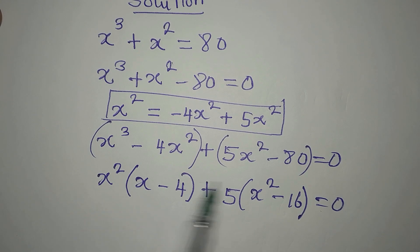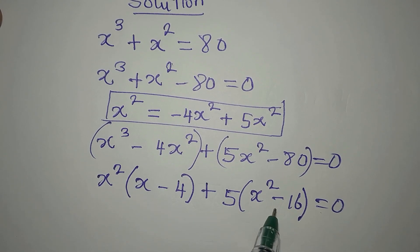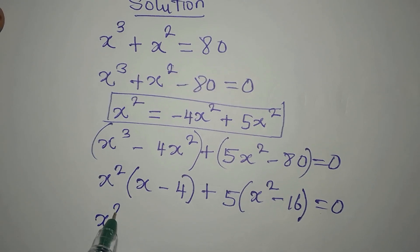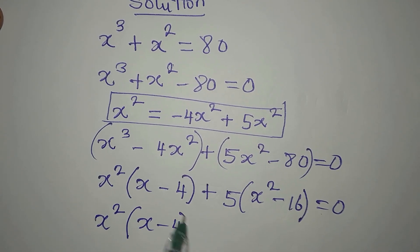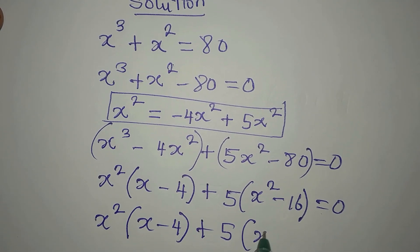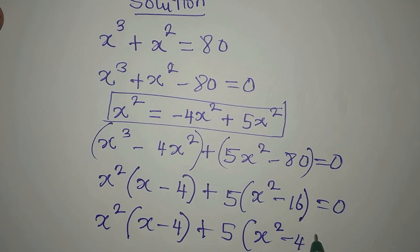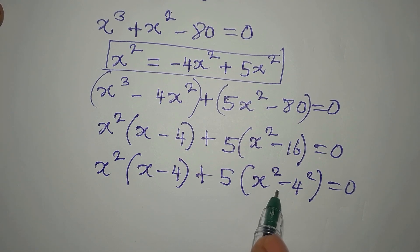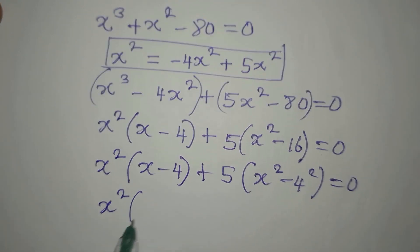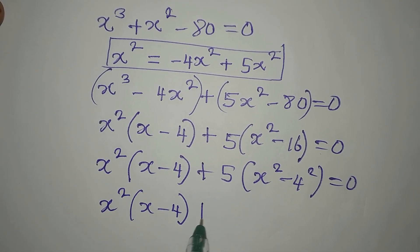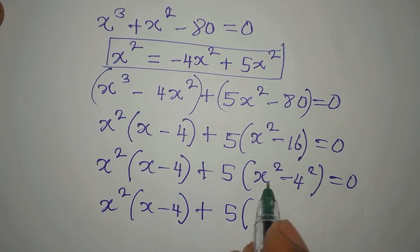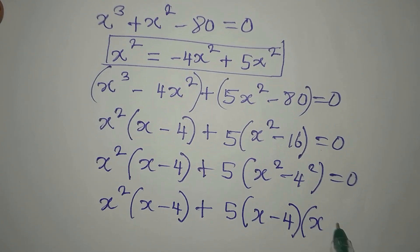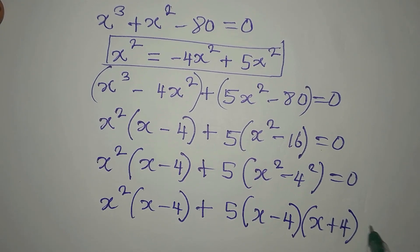We still need a common factor, so we simplify further. We have x²(x - 4) + 5(x² - 4²). Notice that 16 is 4 squared, so we can apply the difference of two squares to get x²(x - 4) + 5(x - 4)(x + 4), and this equals 0.